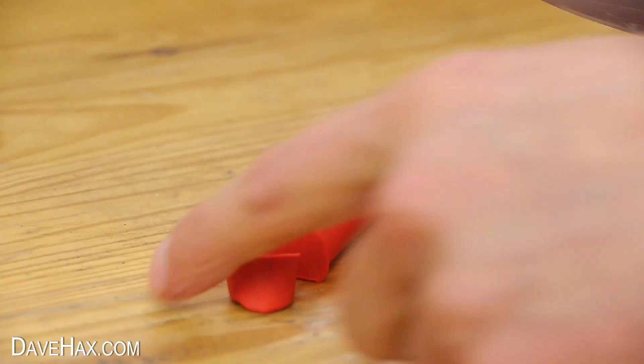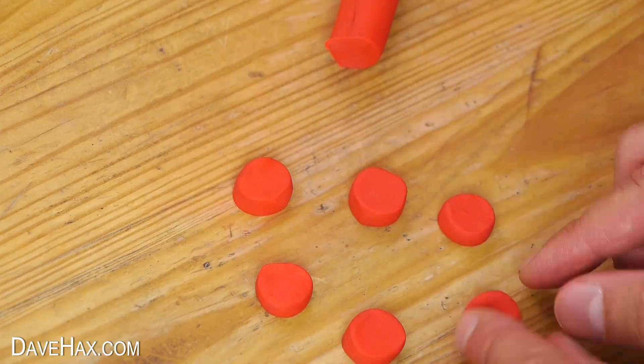Then use a knife to chop off 6 pieces like this and try to roll them all into an equal size. These are going to be our zeros.